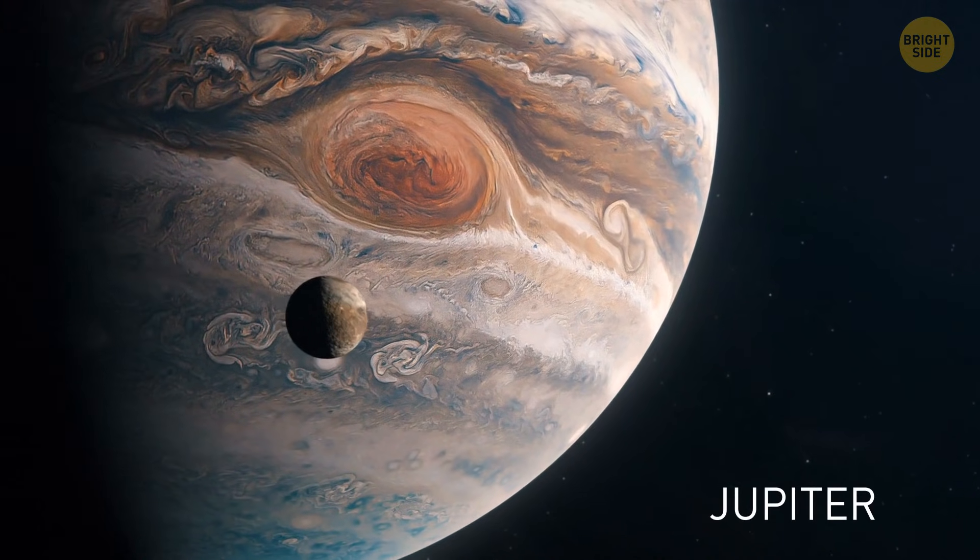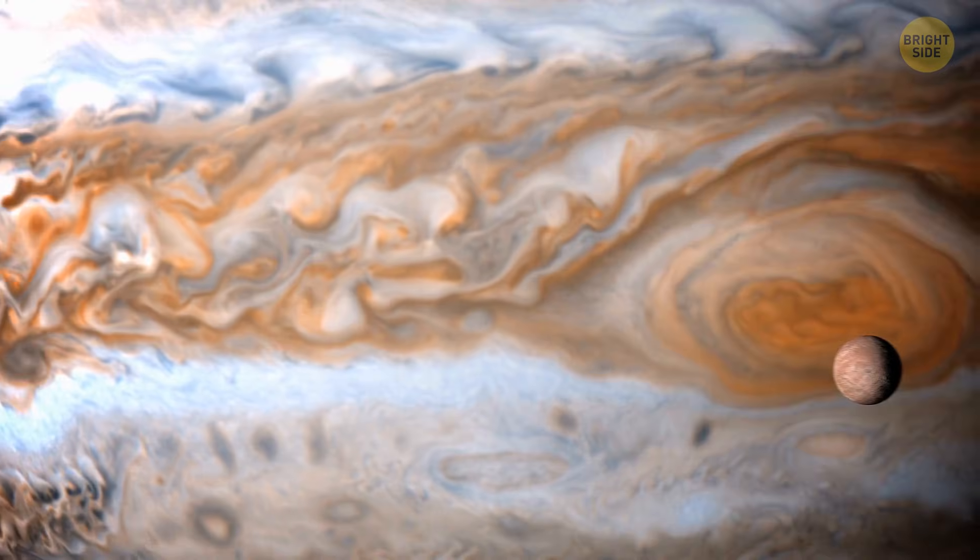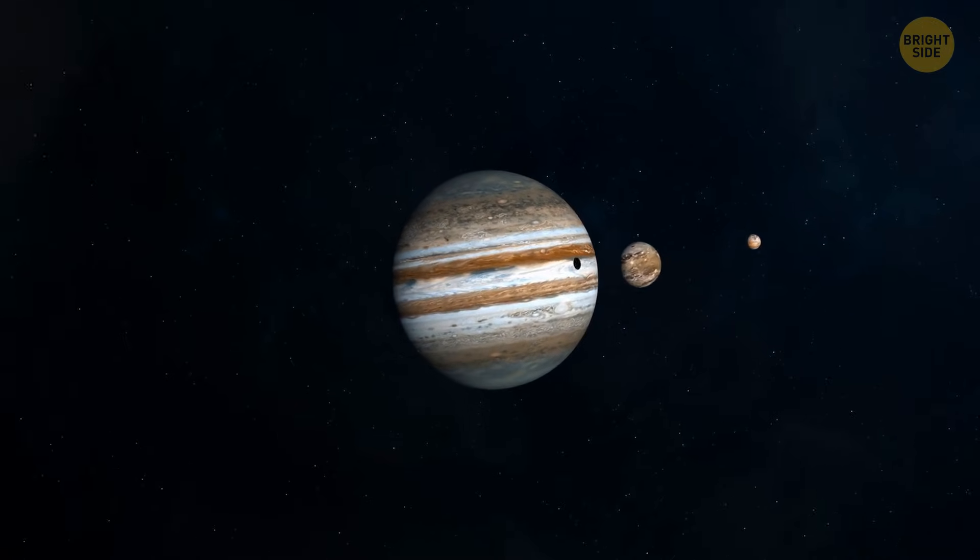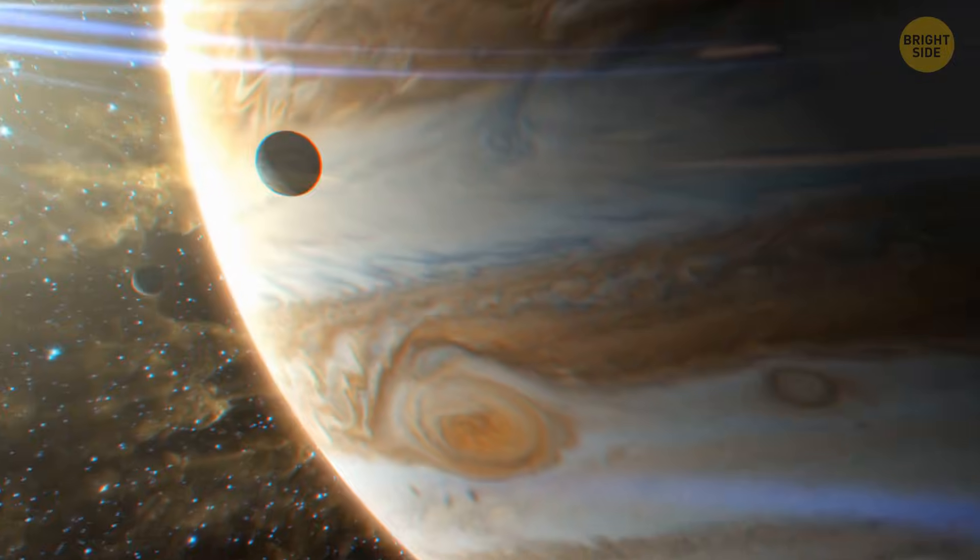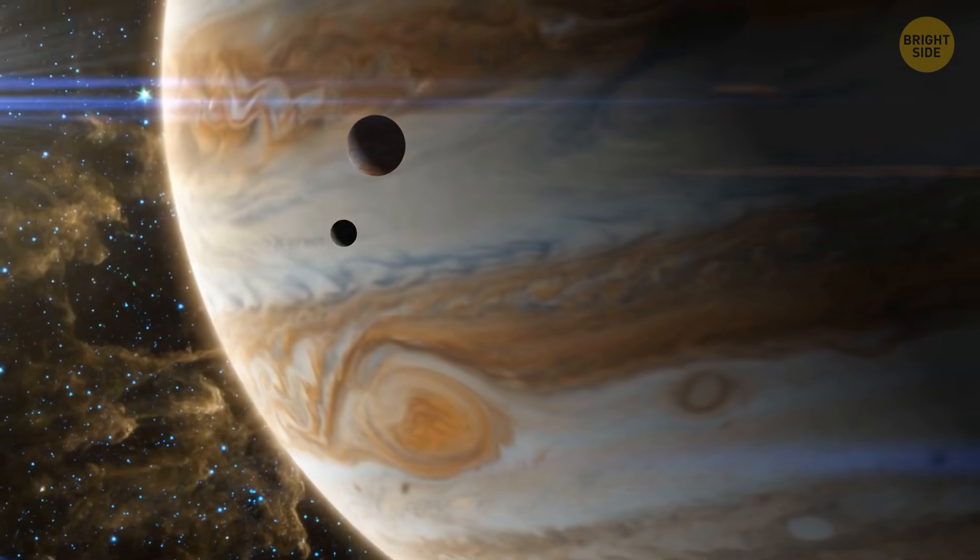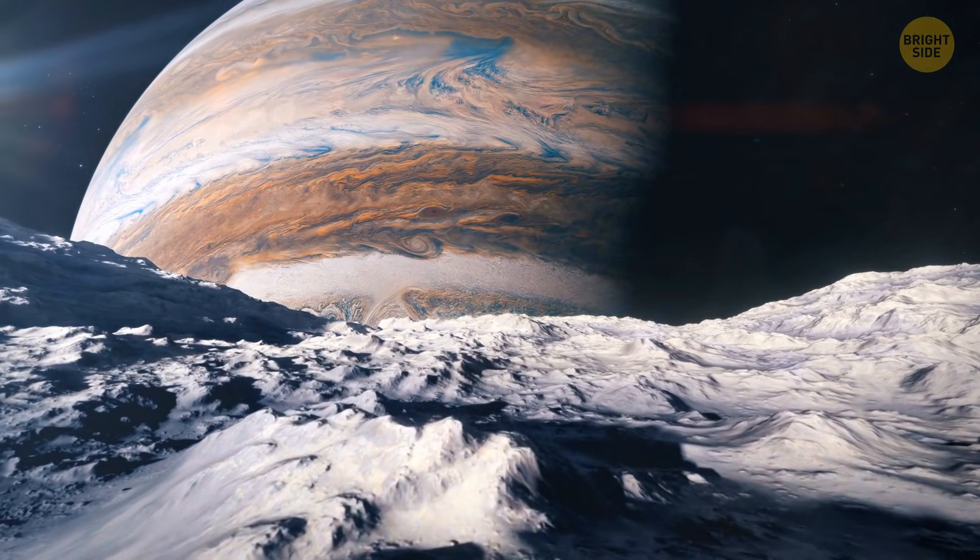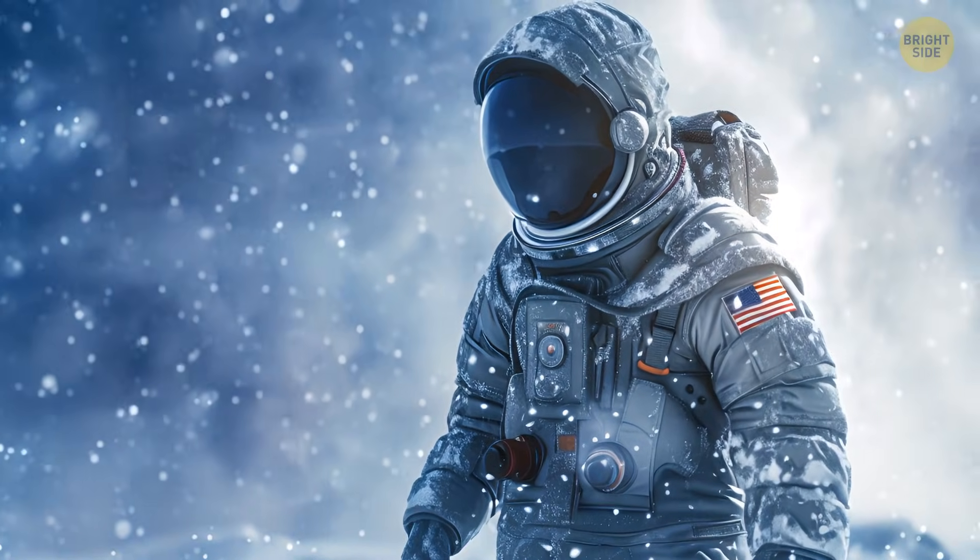Jupiter, the big guy in our solar system, doesn't bother with the whole seasons drama. It keeps things simple with a tiny tilt of 3 degrees, almost as laid back as Mercury. Plus, its orbit is a close match to a perfect circle, so it doesn't have much variation in sunlight. Also, with a speedy rotation of less than 10 Earth hours, there's no time for the appearance of seasons from long nights. Winter on Jupiter is basically a repeat of any other time of the year.